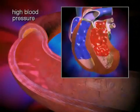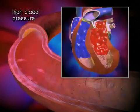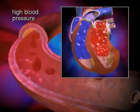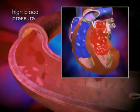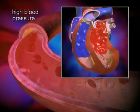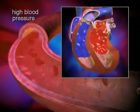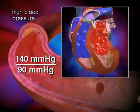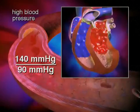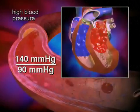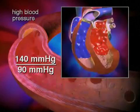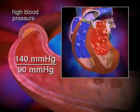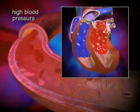Abnormally high pressure within the arteries is called hypertension, or high blood pressure. Hypertension is usually diagnosed when blood pressure measurements are higher than 140 mm of mercury systolic and 90 mm of mercury diastolic on three separate occasions.